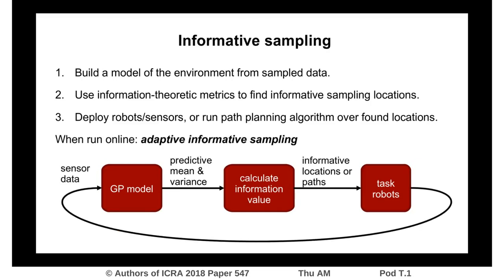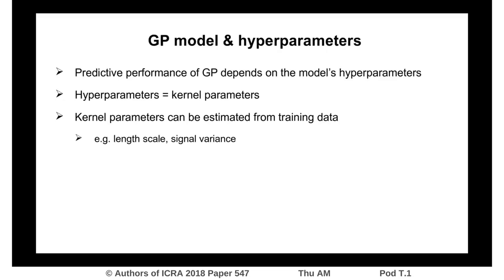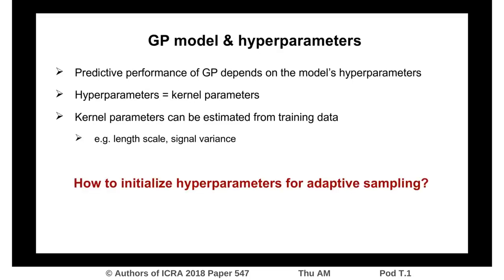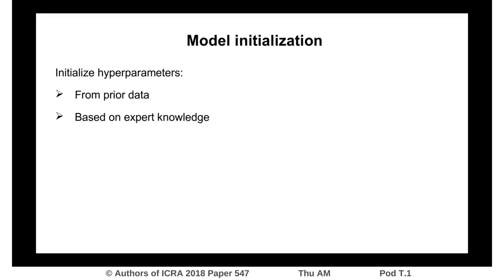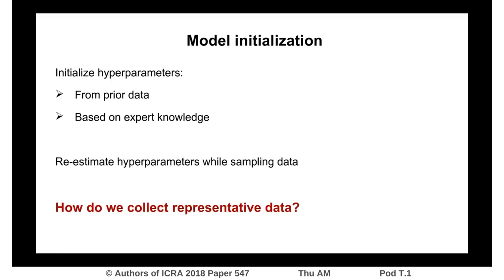In Gaussian process regression, the predictive performance of the model depends on the model's hyperparameters. These are the parameters of the GP's kernel, such as the kernel's length scale, and can typically be estimated from training data. One question is, how do we initialize the hyperparameters for adaptive sampling? Typical methods include estimating them based on prior data and using expert knowledge, but prior data may not be available. In both cases, we would want to re-estimate the hyperparameters while we are sampling. The question is, how can we make sure to collect representative data at the start of an adaptive sampling routine to correctly estimate the hyperparameters?